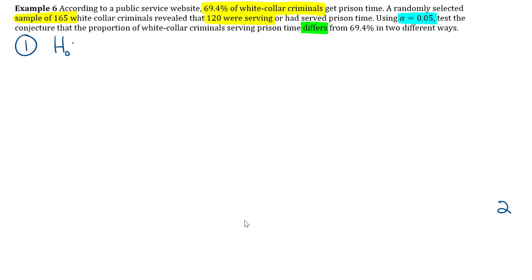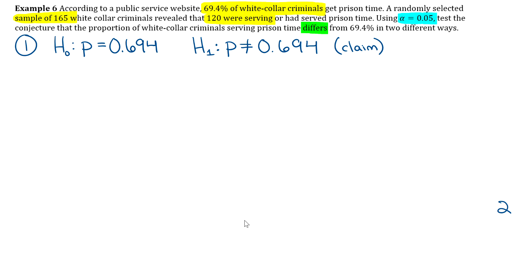This question is about proportions, so for the null hypothesis we use p. The null is p equals 0.694 — remember to convert percents to decimals. We're testing whether the proportion differs from 69.4%, so the alternative is p does not equal 0.694, labeled as the claim. For proportions we learned both the traditional and p-value methods; since the question doesn't specify, let's use the p-value method since it's a bit quicker.